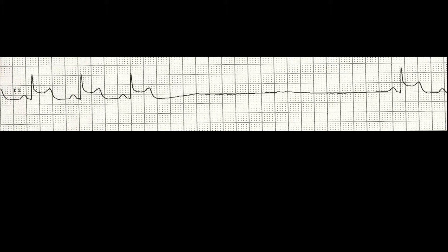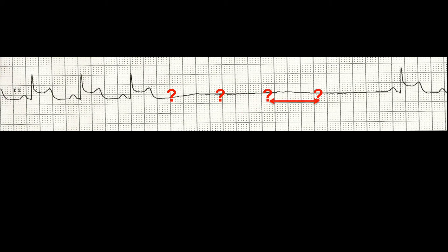Here is another example of ST elevation inferiorly. At the beginning of the tracing, the PR interval is normal and the QRS is narrow. Marking out the atrial rate to establish the PP interval, we can then see going forward that there is a P wave that should be there but is not — and again, no P wave, no P wave, no P wave. Therefore, there is evidence of sinus node disease in the context of an inferior STEMI, meaning the blood supply to the sinus node has been affected. However, there is no evidence of AV nodal disease, as the PR interval is normal and the QRS has remained narrow.